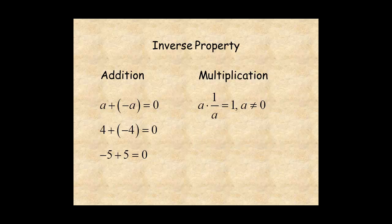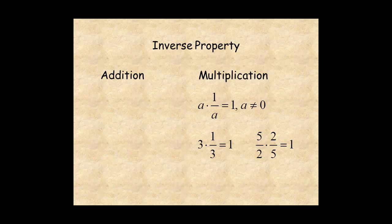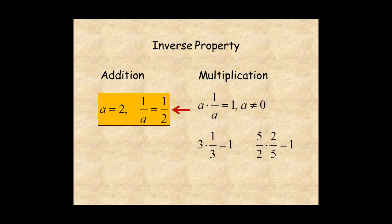For multiplication, every number a has an inverse such that their product is one. For example, one third is the inverse of three, and two over five is the inverse of five over two. Notice this symbol is not one over a or one divided by a — it's an expression for the inverse of a, or the reciprocal of a. For example, if a equals two, then the inverse of a is one over two. And if a equals one third, then the inverse of a is three.